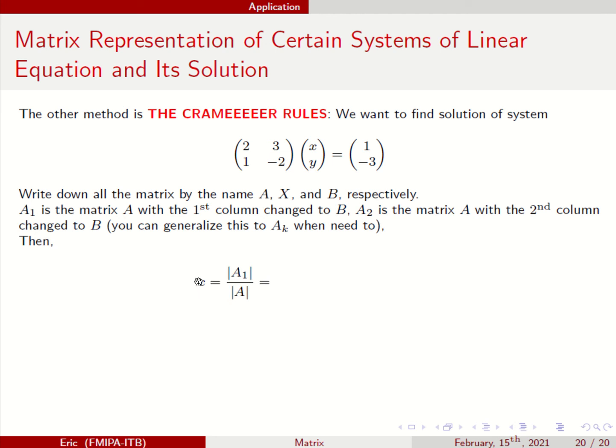So x is given by, because x is the first one, you have A1, determinant of A1 divided by determinant of A. This is your Cramer rule. And if you want to have y, it's the determinant of A2 divided by the determinant of A. So you have the same, minus 1 and 1. And you can do Cramer rule for n times n matrices, but only if the system of linear equations only has one solution.